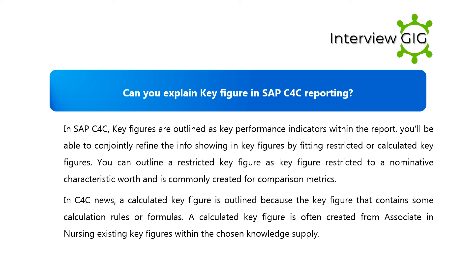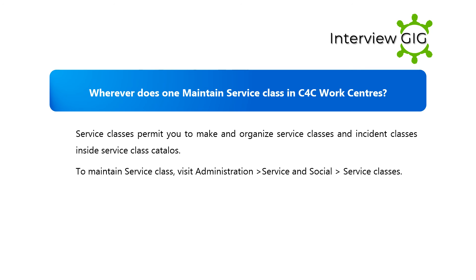Can you explain key figures in SAP C4C reporting? In SAP C4C, key figures are defined as key performance indicators within the report. You can refine the data shown in key figures by setting restricted or calculated key figures. A restricted key figure is a key figure restricted to a specific characteristic value and is commonly created for comparison metrics. A calculated key figure is one that contains calculation rules or formulas, often created from existing key figures within the chosen data source.